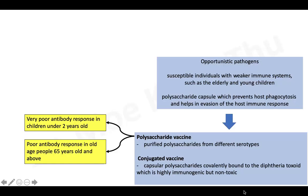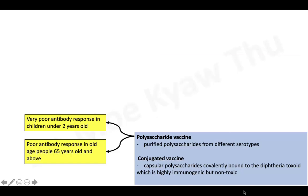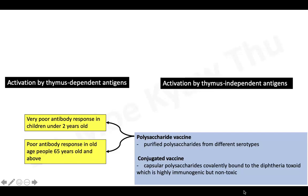For these reasons, the conjugate vaccine was developed for children under 2 and adults 65 and above. The basic difference between these two vaccines can be explained based on how B cells are activated to produce antibodies. Polysaccharide vaccine is based on B cell activation by a thymus-independent mechanism, while conjugate vaccine is based on a thymus-dependent antigen mechanism.